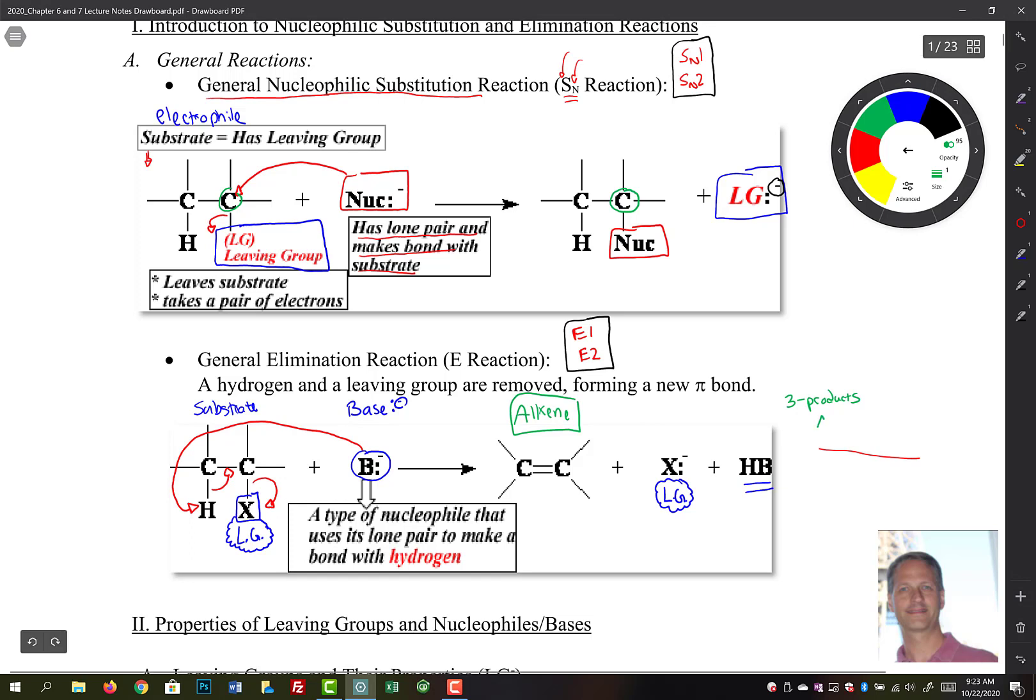And with three products, the delta S term of your delta G for your Gibbs energy is more important. So remember that's a T delta S. So often when we heat reaction mixtures, we tend to favor elimination over substitution, because there are three products for that elimination reaction.